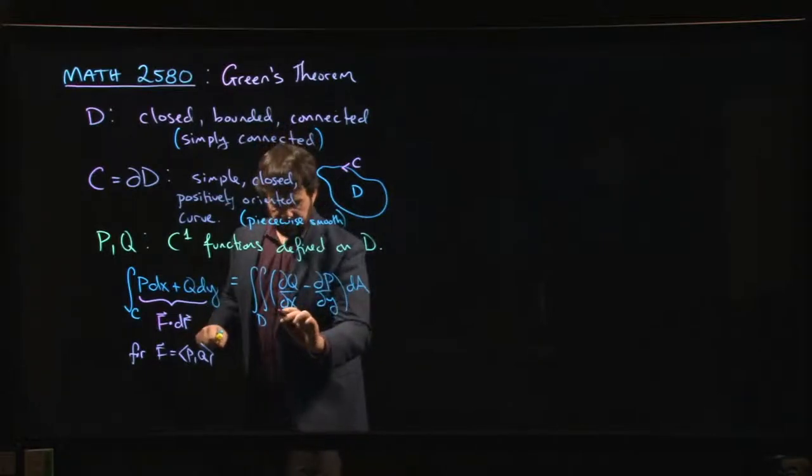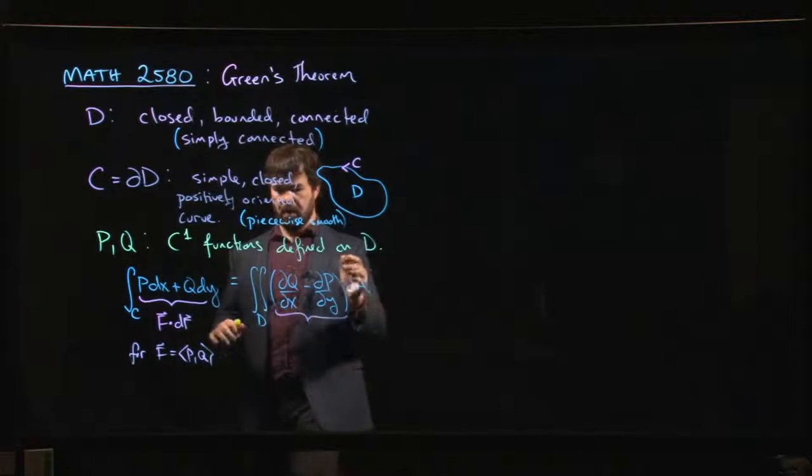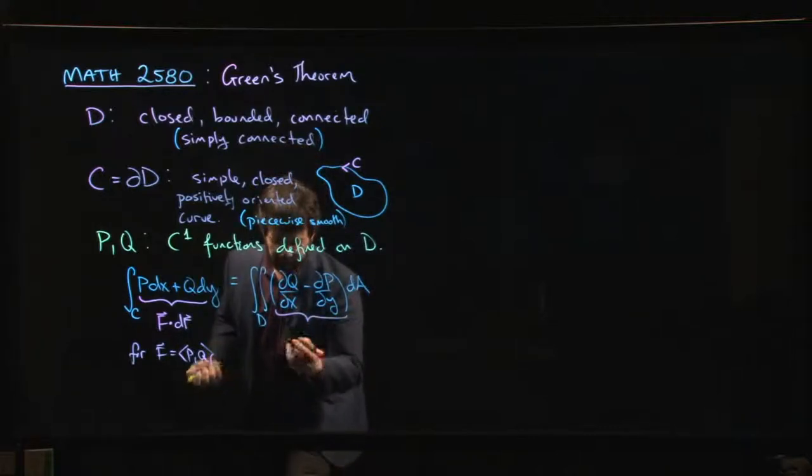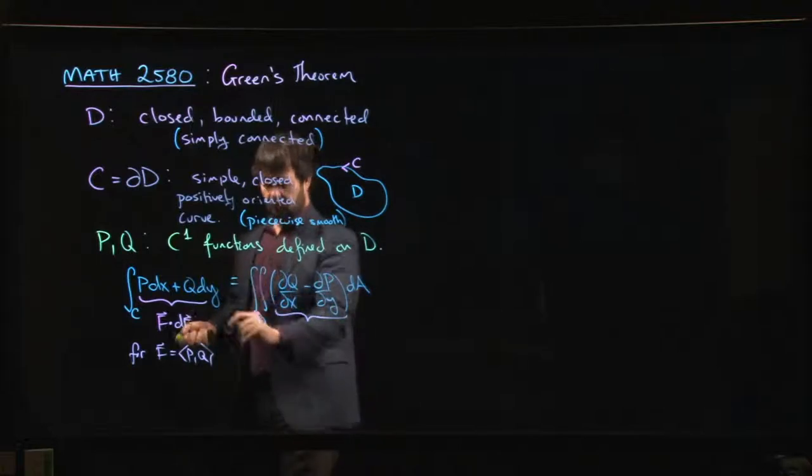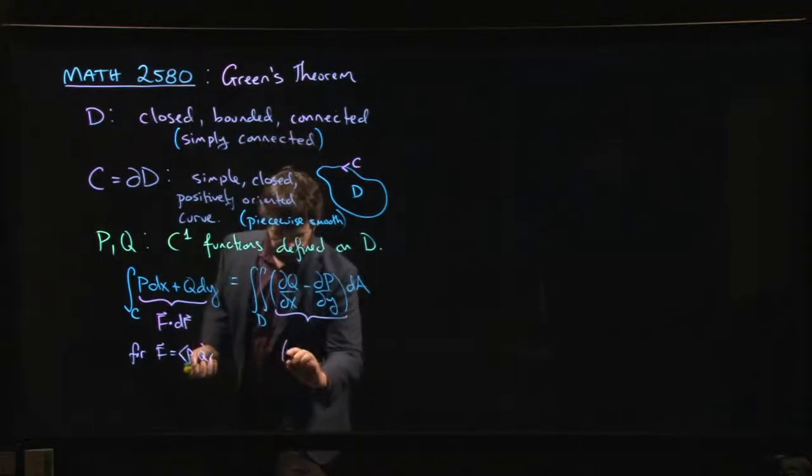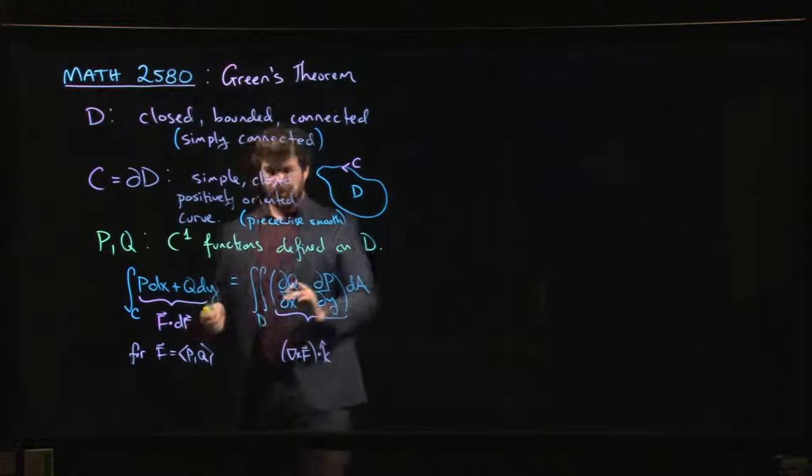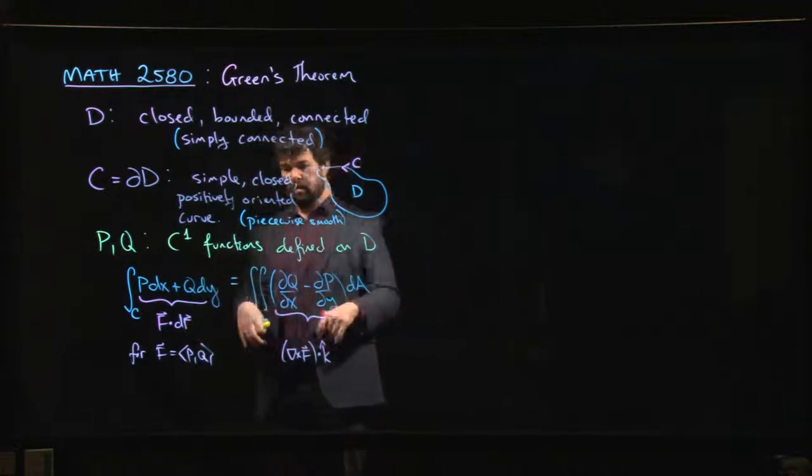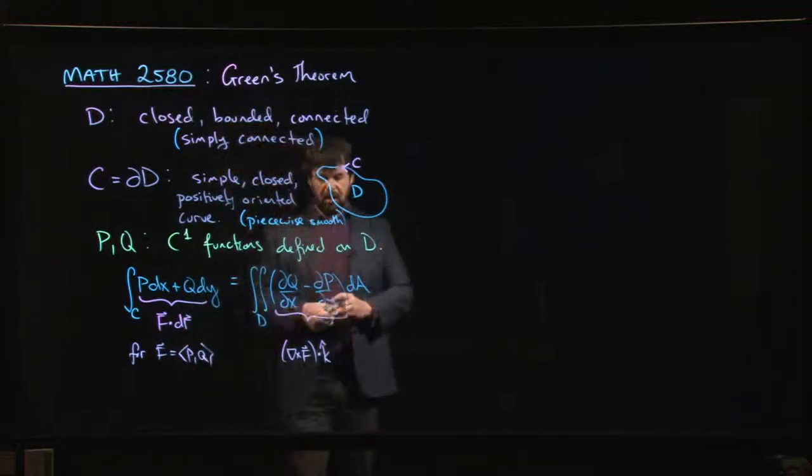We've also discussed the fact that what you have here is basically the z component of the curl. One way to think of it is as the curl of f dotted with k. Everything is in the plane here. These functions depend only on x and y. There's no z component to this vector field.